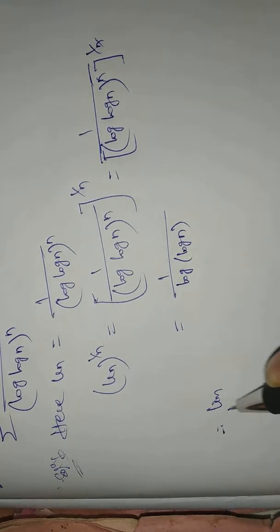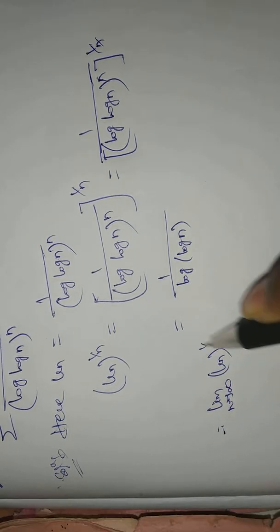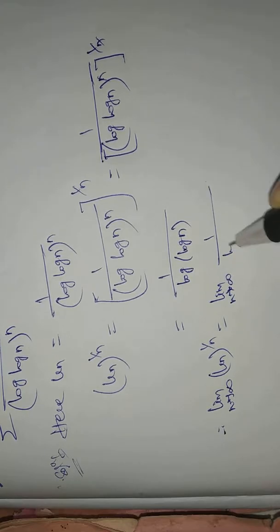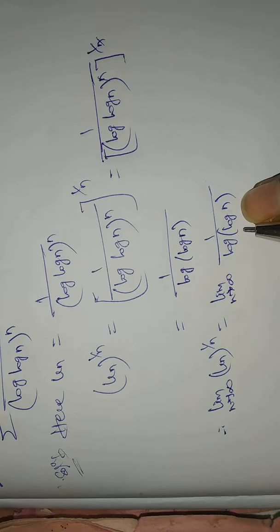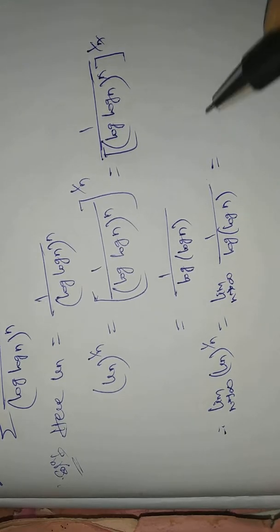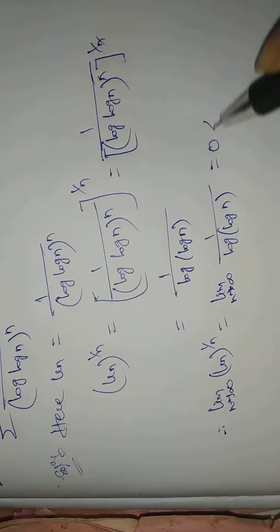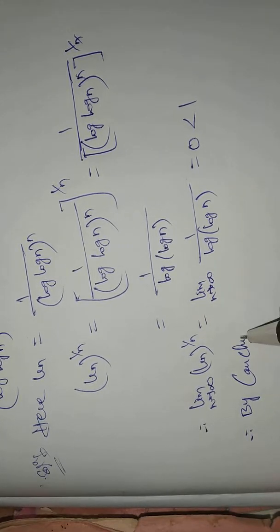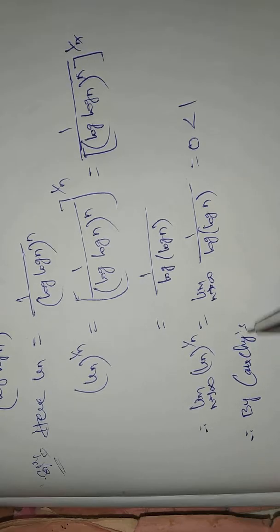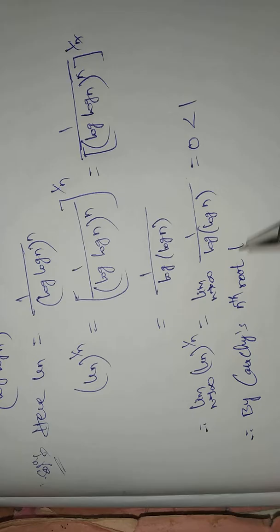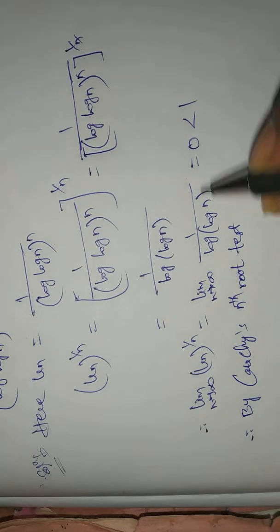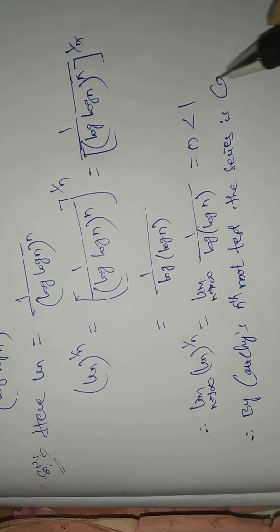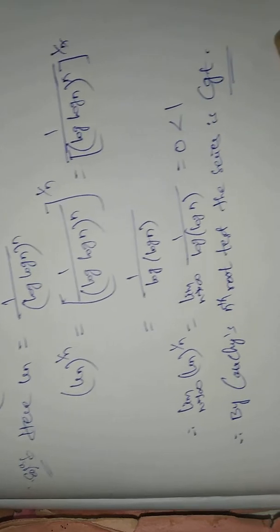Therefore, limit as n tends to infinity of u_n^(1/n) equals limit as n tends to infinity of 1 by log(log n). Since log(log n) tends to infinity, this limit equals 1/infinity = 0. Since 0 is less than 1, by Cauchy's nth root test, the series is convergent.